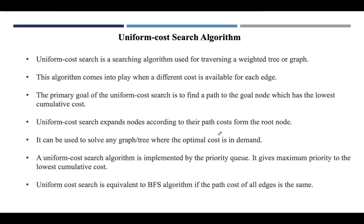In this lecture, let us discuss the Uniform Cost Search algorithm, which is mainly used for traversing a tree or graph that has weights. You can use this algorithm especially when the cost associated with each edge is different. This algorithm always considers the path to the goal node which has the lowest cumulative cost.